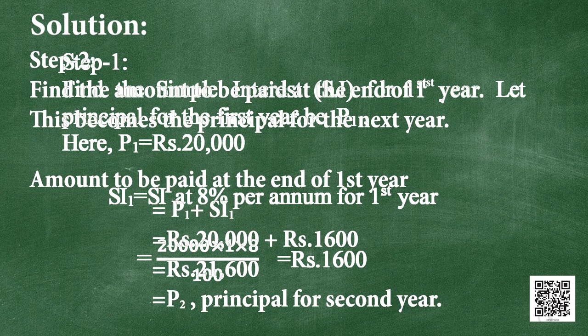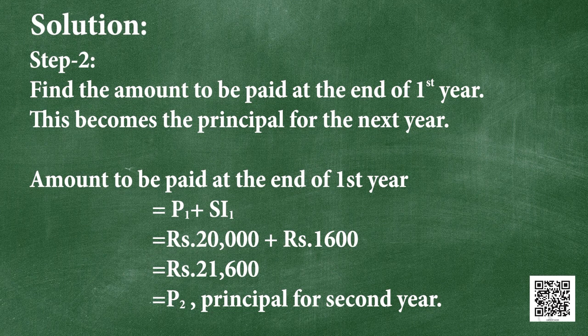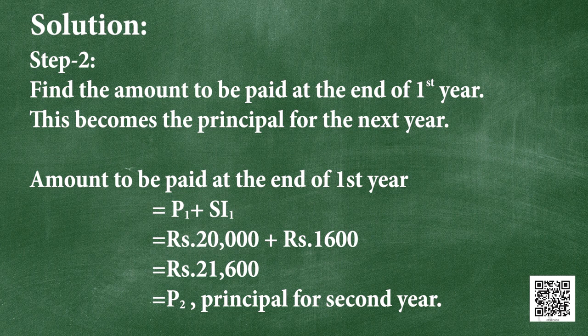Step 2: Find the amount to be paid at the end of the first year — this becomes the principal for the next year. Amount at end of year 1 = P1 plus SI1 = rupees 20,000 plus rupees 1,600 = rupees 21,600. This will be our principal for the second year, denoted P2.